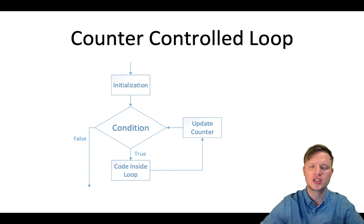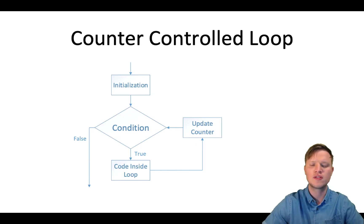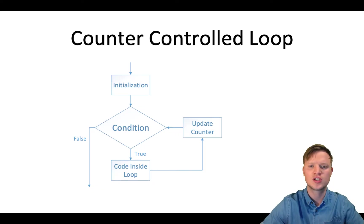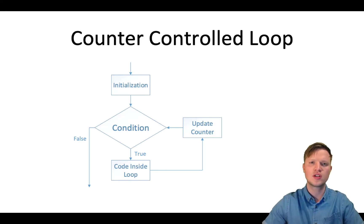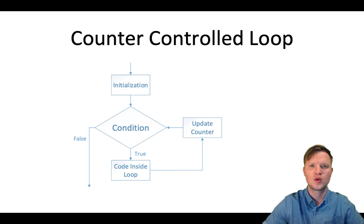If we look at the flow diagram, you will see first of all we initialize — this initialization is the counter variable that we will initialize. Then there is a condition. If this condition is true, the code inside the repetition structure will execute, and after that code we will update the counter variable and go back to the condition. This will repeat until the condition is false, and when the condition is false we will resume with the rest of the code.